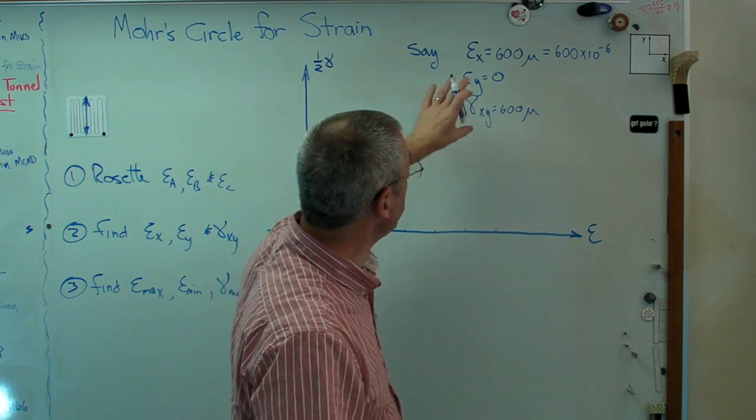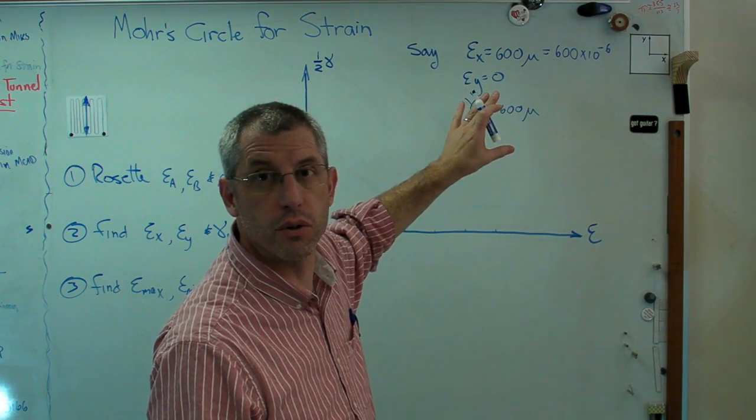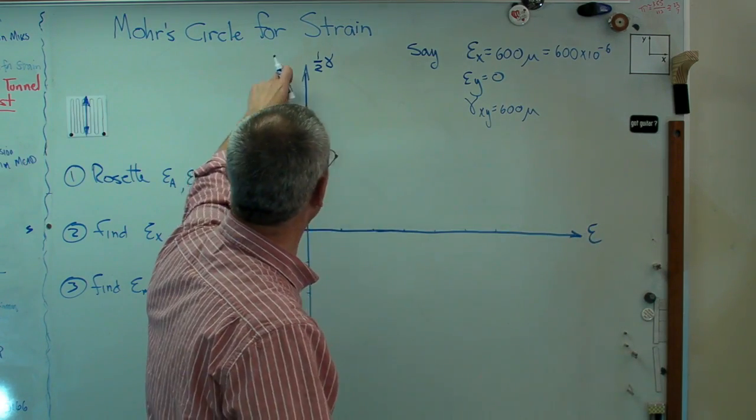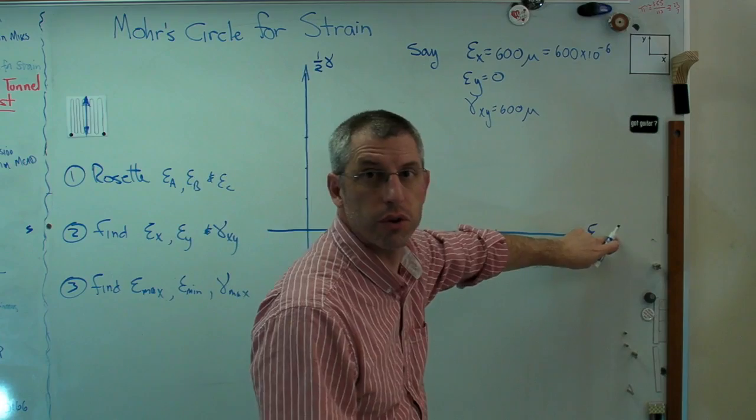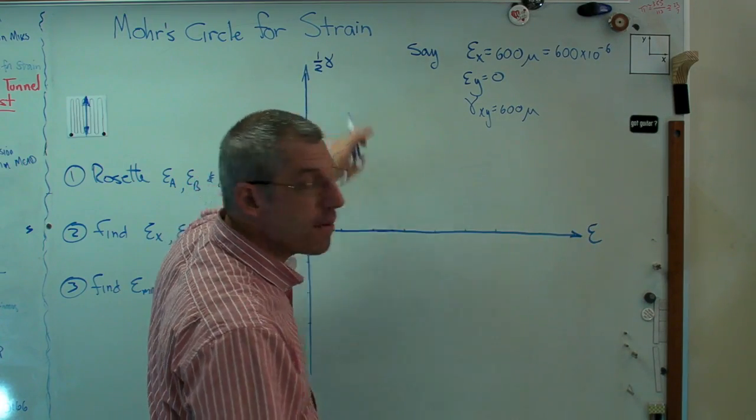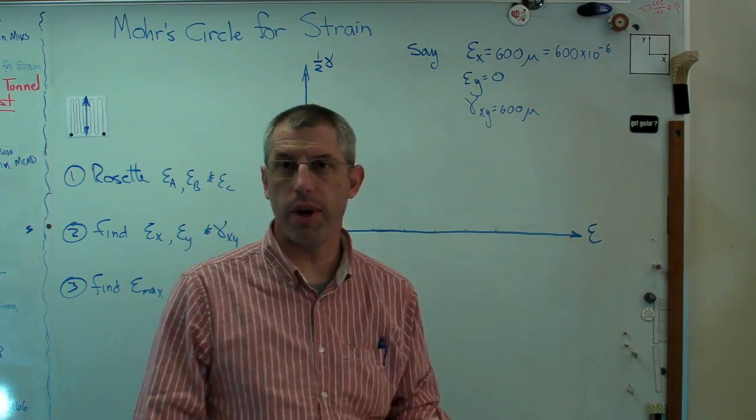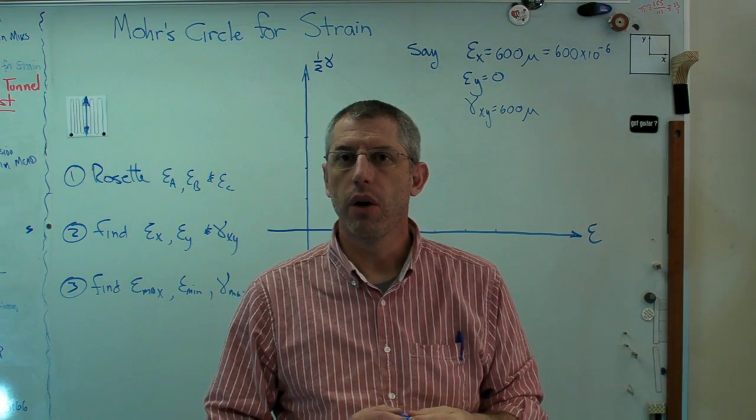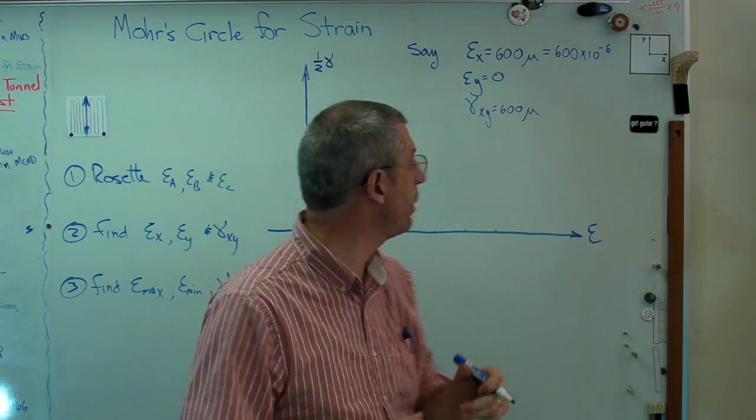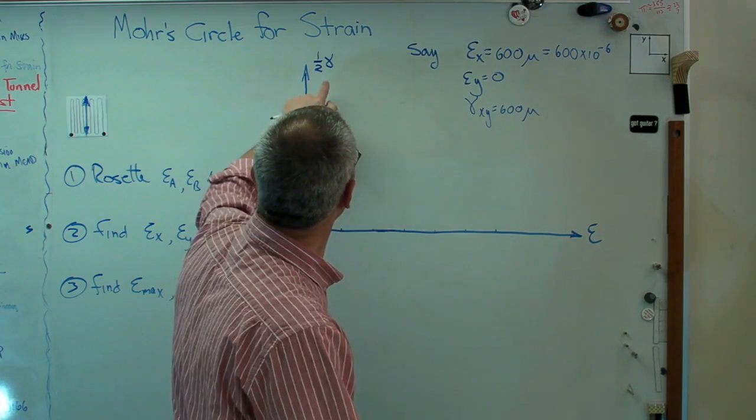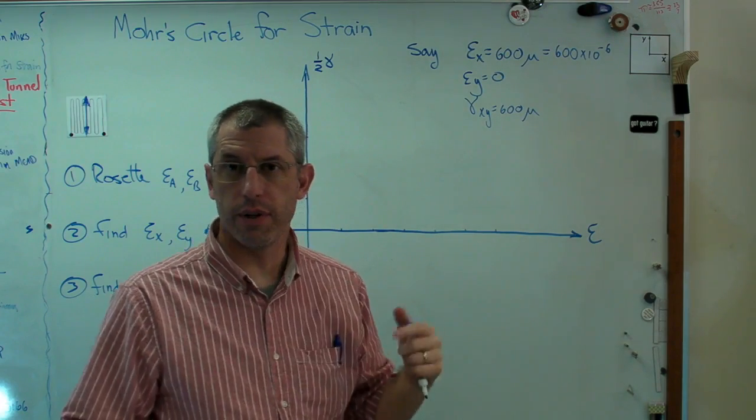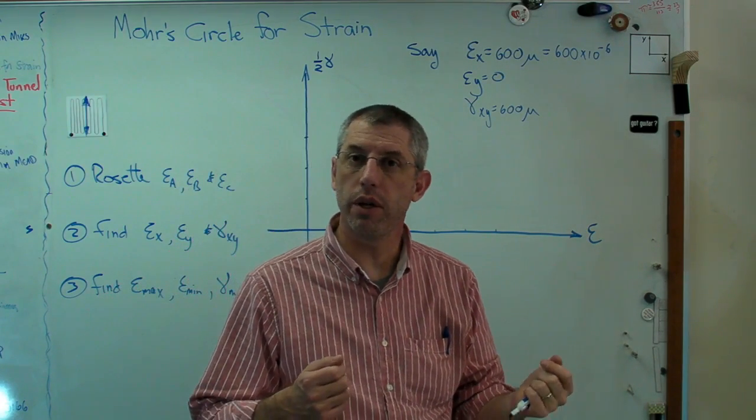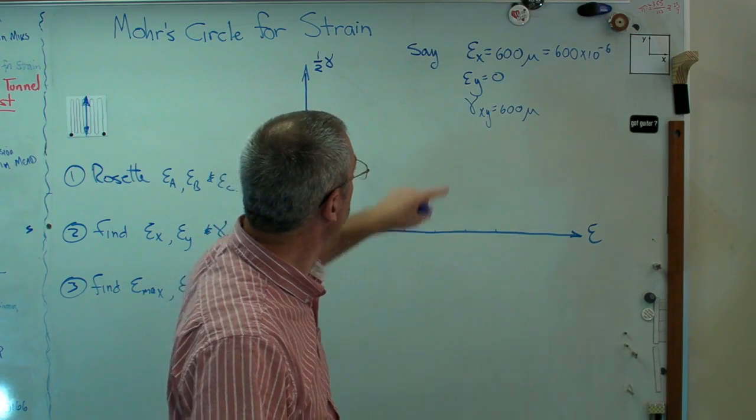So we're going to do everything like we did with Mohr's circle for stress, with one exception. Where this had been normal stress, shear stress, this is normal strain, this is one half shear strain. And that one half just drops out of the mathematics. You can go back to a reference perhaps in your Strength and Materials book or go on the web. But that one half is there because of the mathematics that describe transformation of strains as you rotate apart.